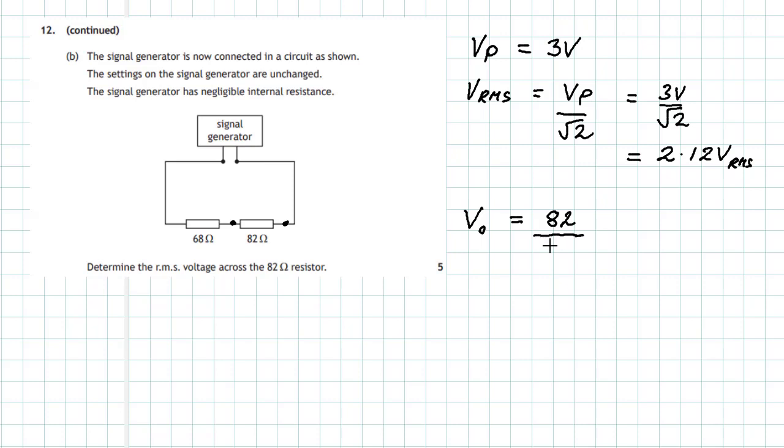And we divide that by the total resistance, 68 plus 82 - that's the rule of thumb - and then multiply it by the Vrms which we worked out, 2.12 volts. When we do that calculation, 82 divided by (68 plus 82) times 2.12, we end up with an answer of 1.16 volts. Remember it's an RMS value we're dealing with here, and we can actually put it down to 1.2 volts to two significant figures.